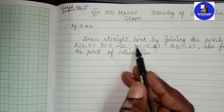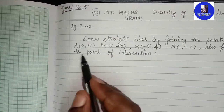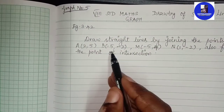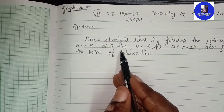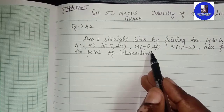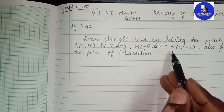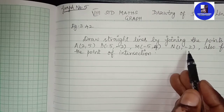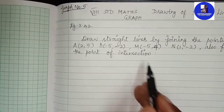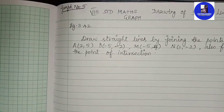Draw straight lines by joining the points A(2,5), B(-5,-2), M(-5,4), N(1,-2). Also find the point of intersection.